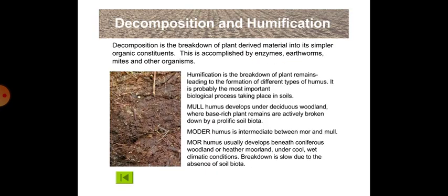Now comes decomposition and humification. Decomposition is the breakdown of plant-derived material into its simpler organic constituents, accomplished by enzymes, earthworms, mites and other organisms. Humification is the breakdown of plant remains leading to the formation of different types of humus, and is probably the most important biological process taking place in soils. Mull humus develops under deciduous woodland where base-rich plant remains are actively broken down by a prolific soil biota. Mor humus usually develops beneath coniferous woodland or heather moorland under cool, wet climatic conditions, where breakdown is slow due to the absence of soil biota. Moder humus is intermediate between mor and mull.